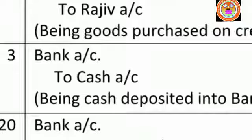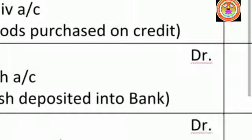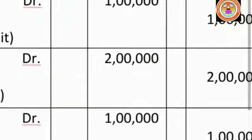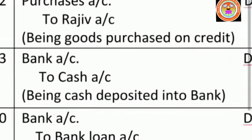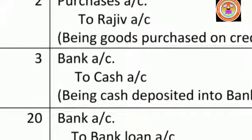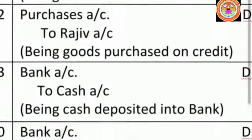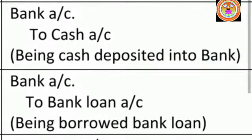Cash goes out from the business to the bank account, so we use the real account rule — credit what goes out — write 'To cash account', amount ₹2 lakhs. Write the narration: being cash deposited into bank.